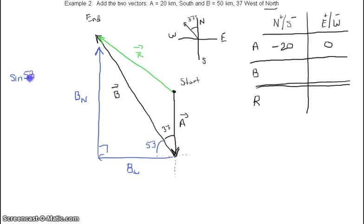Sin of 53 would be B north divided by 50. The north component would then equal 40 kilometers to the north. So then I can put 40 in here to the north.